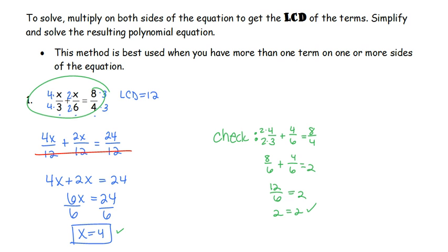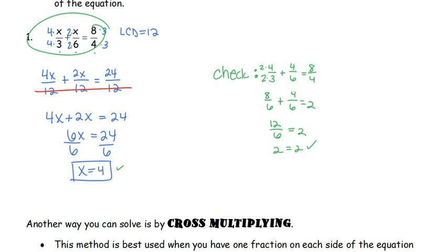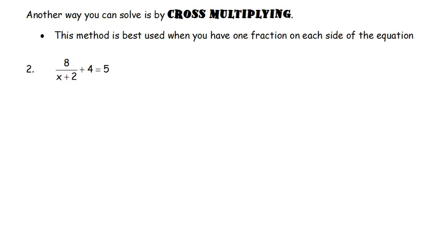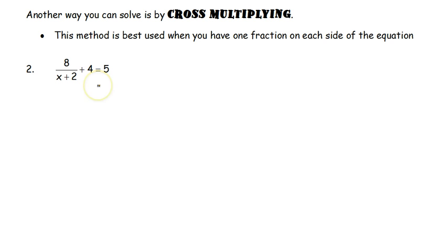That's our first method. Our second method is cross-multiplying. This method is best used when you have one fraction on each side of the equation. For example, looking at number 2, I don't have one fraction on each side — I have more than one term on one side. You're only going to cross-multiply when you have one fraction on both sides, or one term on both sides.